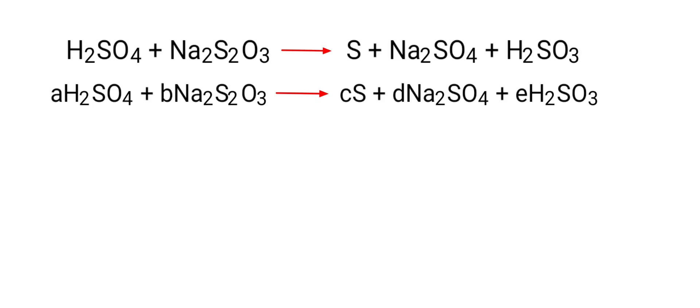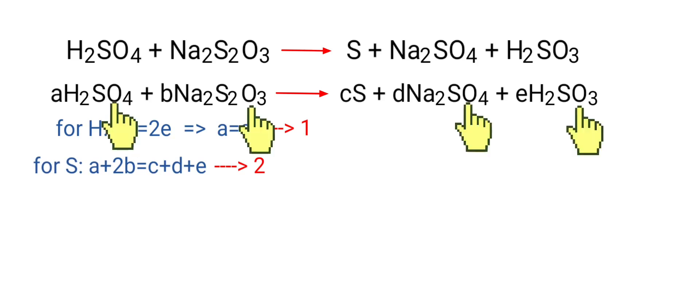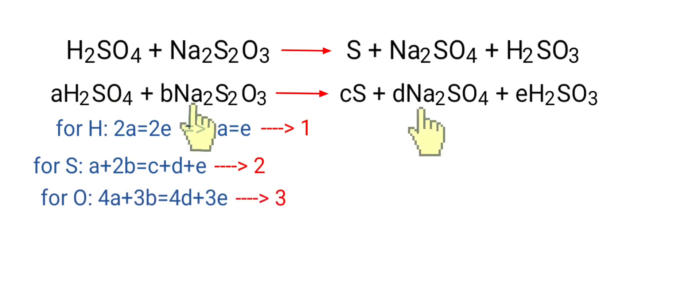Write algebraic rules for each element. For hydrogen, 2A equals 2E, so A equals E. For sulfur, A plus 2B equals C plus D plus E. For oxygen, 4A plus 3B equals 4D plus 3E. For sodium, 2B equals 2D, so B equals D.